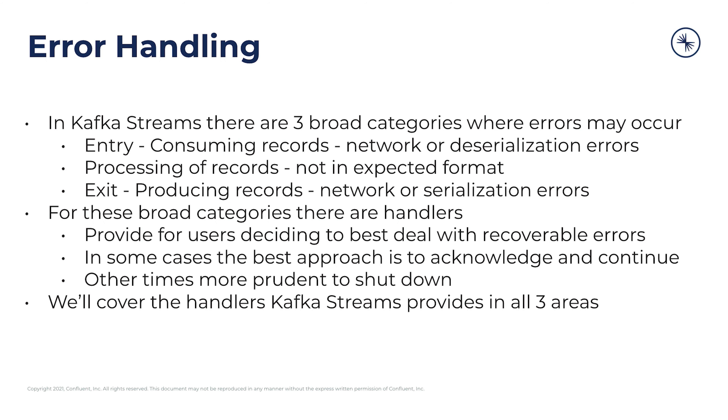In Kafka Streams, there are really three broad categories where errors can occur. The first is the entry point — this is when you're consuming records. It has to do largely with the consumer client itself. This can be things like network or deserialization errors.